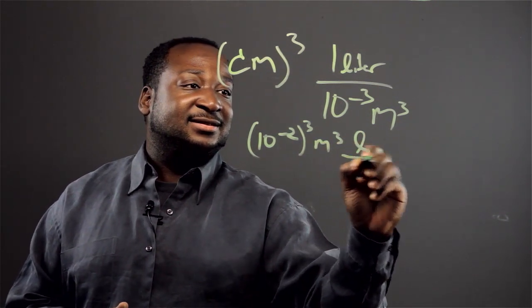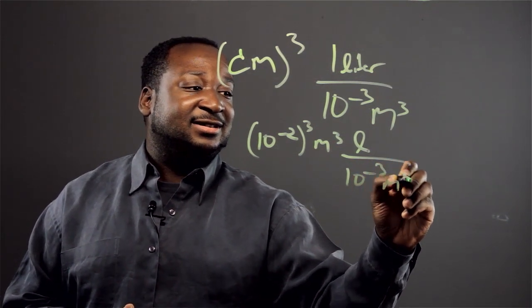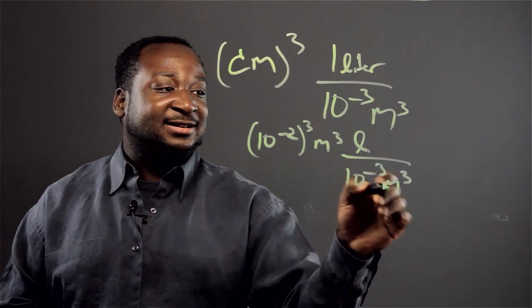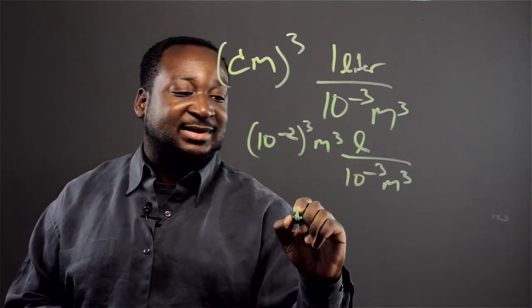liter over 10 to the negative 3 meter cubed. And now the meters cubed cancels, so we get 10 to